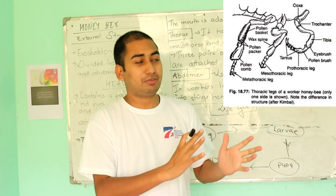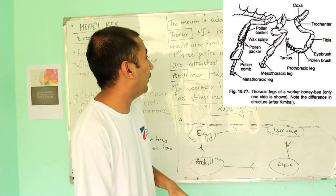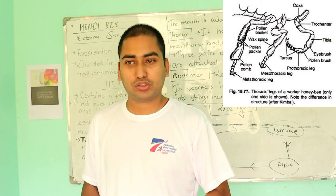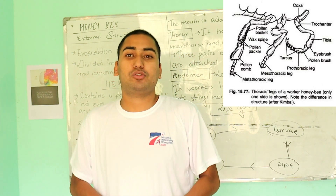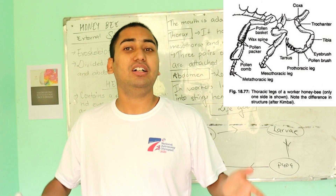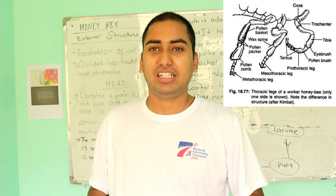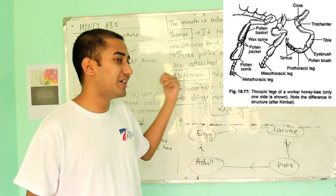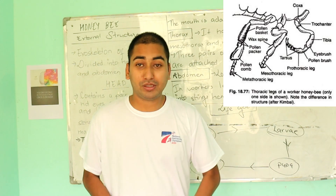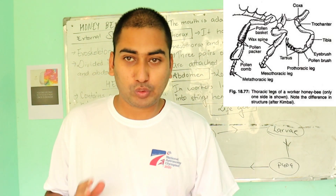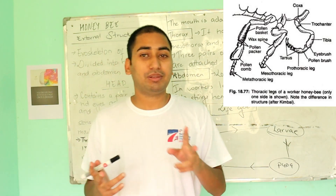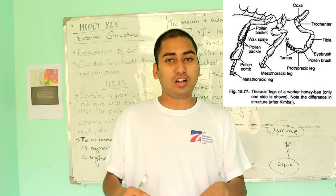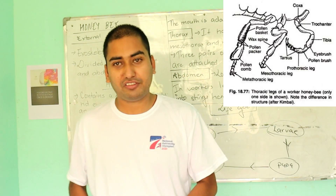The thorax bears the legs and wings. The insect has 3 pairs of legs and 2 pairs of wings — that means 6 legs and 4 wings total.